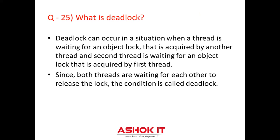Question twenty-five: What is deadlock? We use the synchronized keyword to make a class or method thread-safe, meaning only one thread can hold the lock on a synchronized method and use it — other threads have to wait until the lock is released. In a multi-threaded environment where two or more threads execute simultaneously, sometimes this causes a deadlock situation. Deadlock can occur when a thread is waiting for an object lock that is acquired by another thread, and that second thread is waiting for an object lock that is acquired by the first one. Since both threads are waiting for each other to release the lock, this condition is called a deadlock.